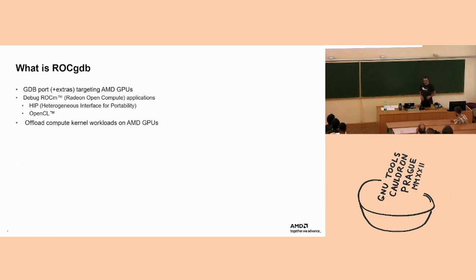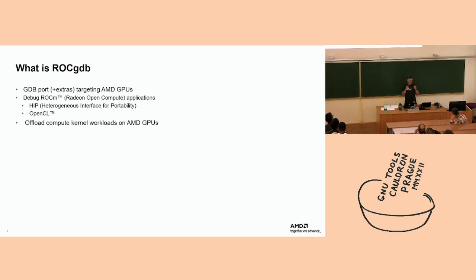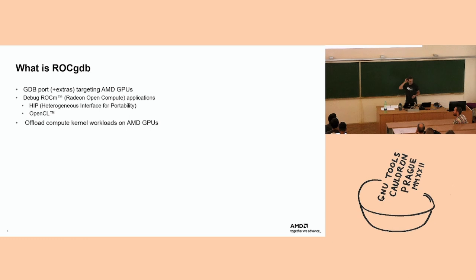ROC GDB is a GDB port meant for users to debug applications that offload work using the ROC M platform to AMD GPUs. The ROC M platform is basically the equivalent of CUDA but for the AMD world. These applications can be written in different languages, but typically we're talking about HIP (Heterogeneous Interface for Portability), OpenCL, and also OpenMP, which I've been told is supported as well.